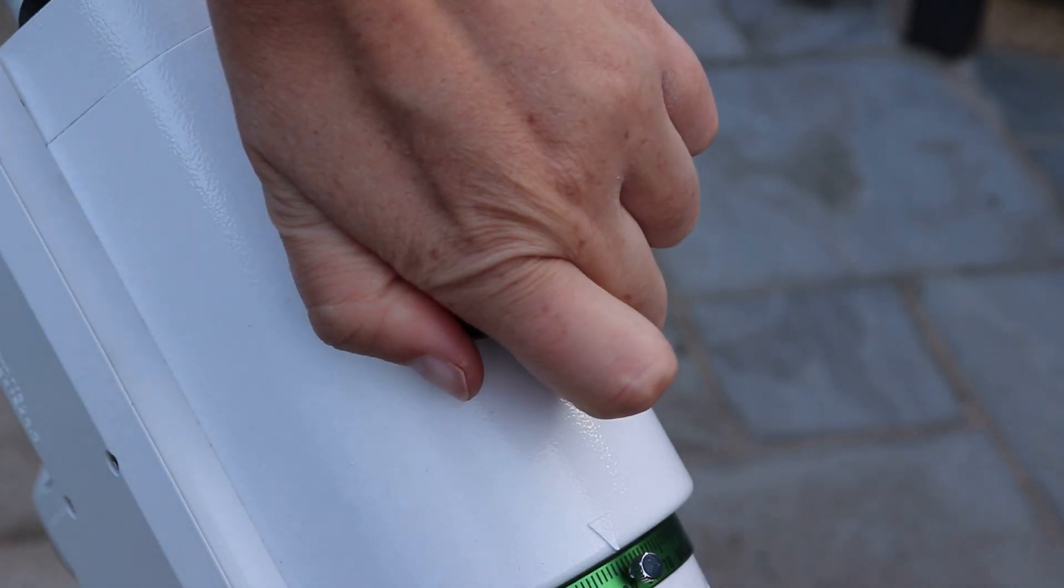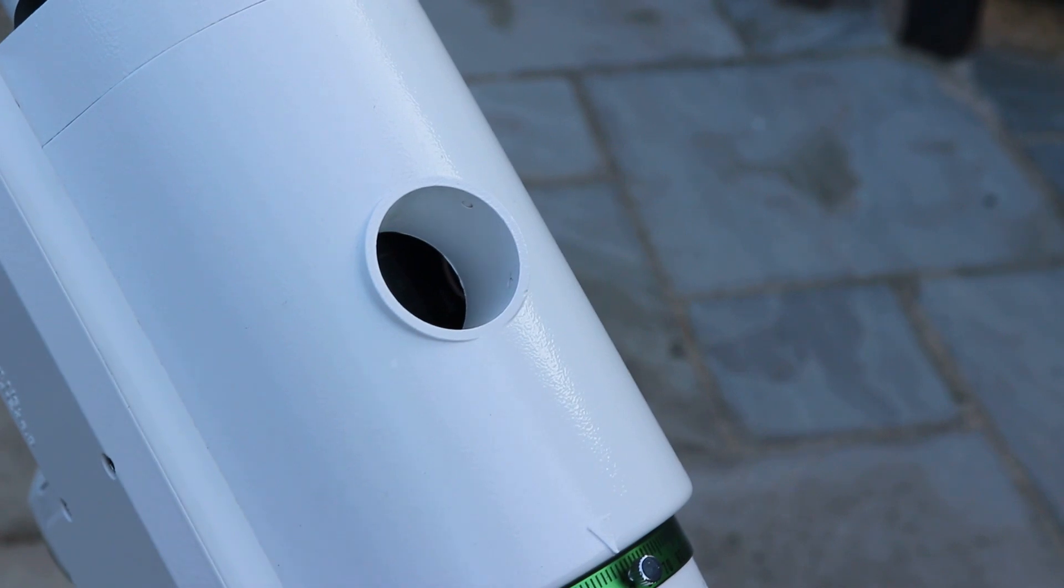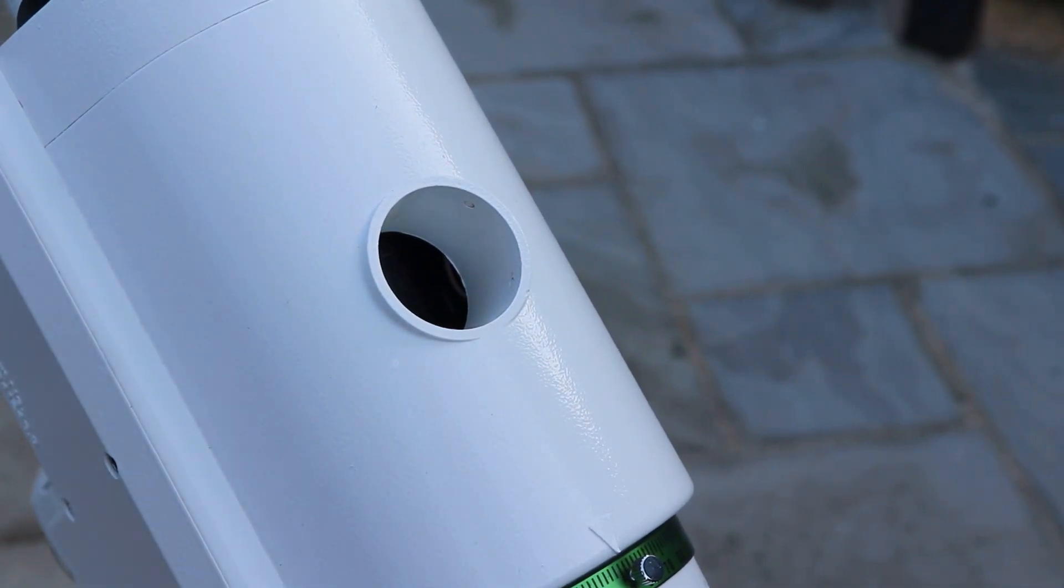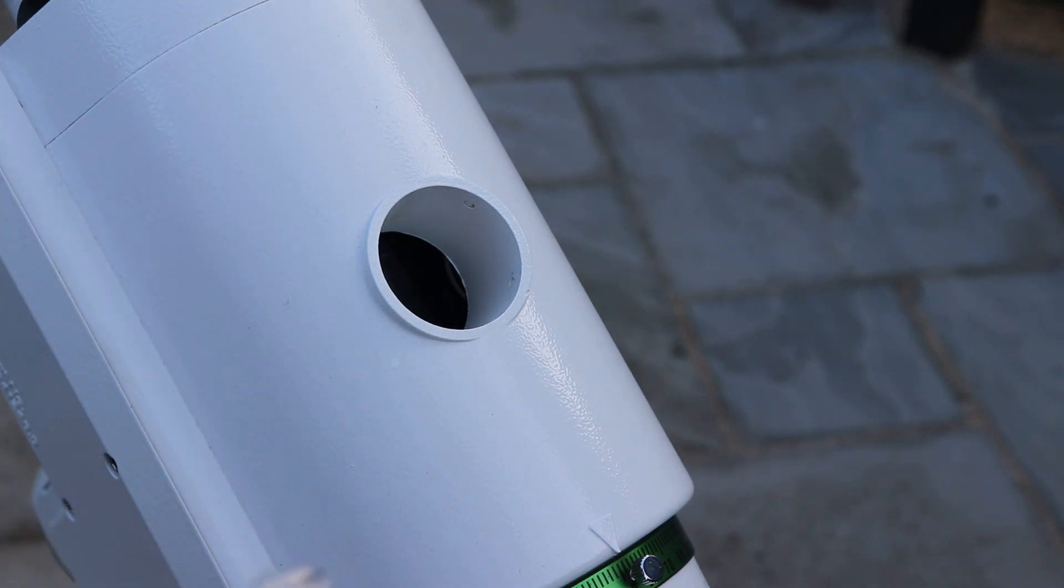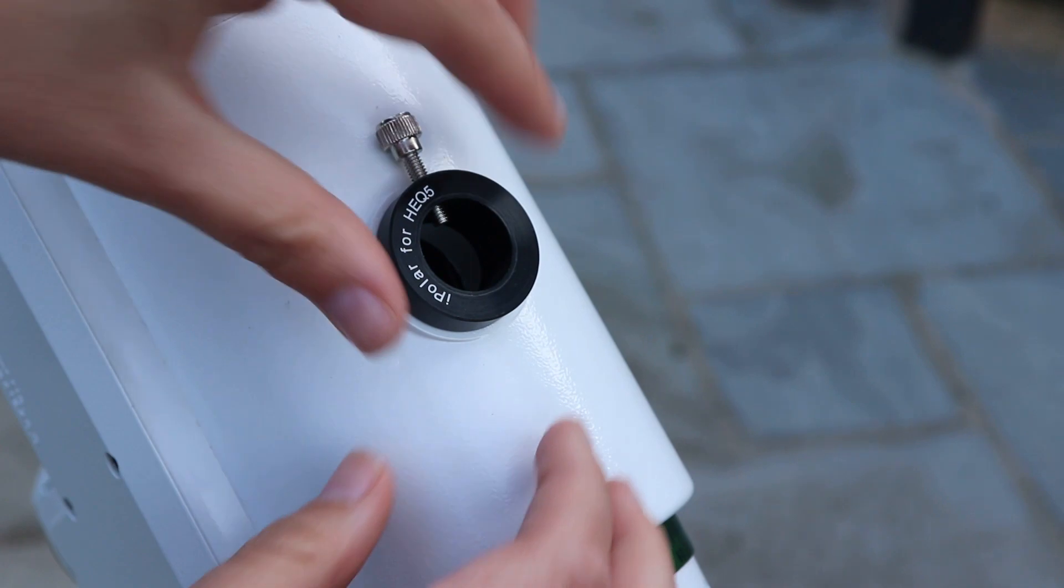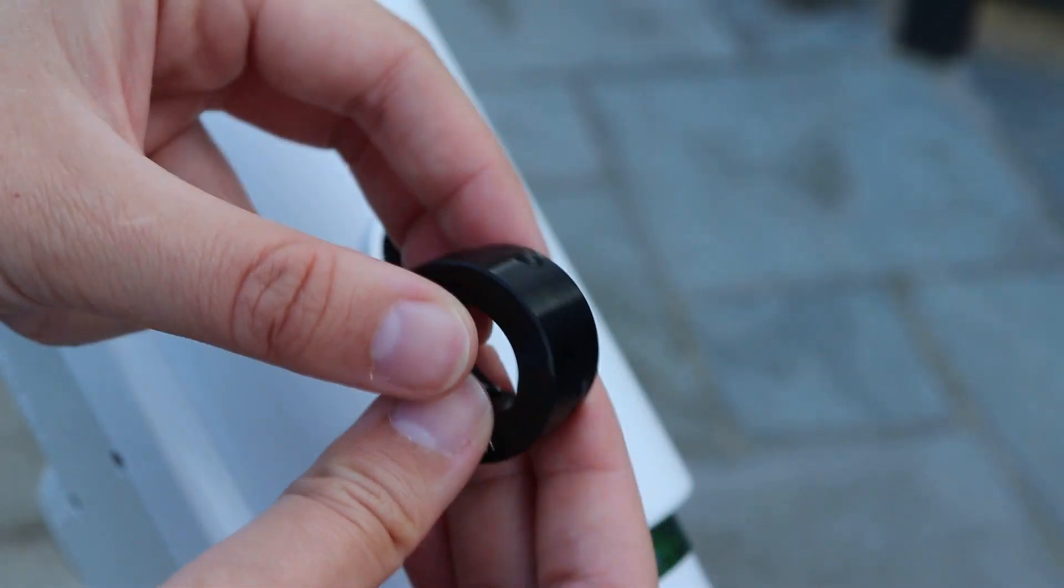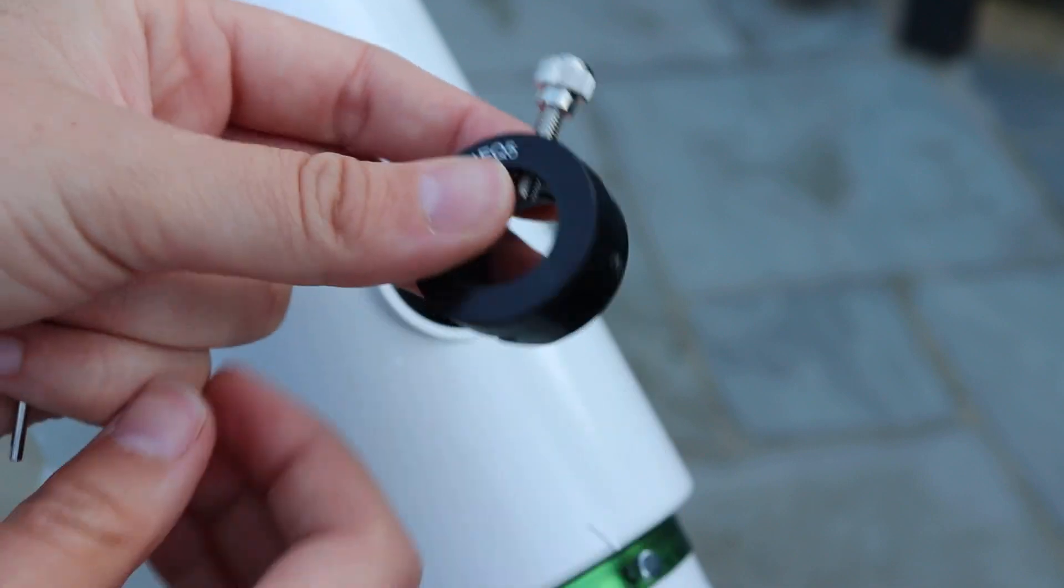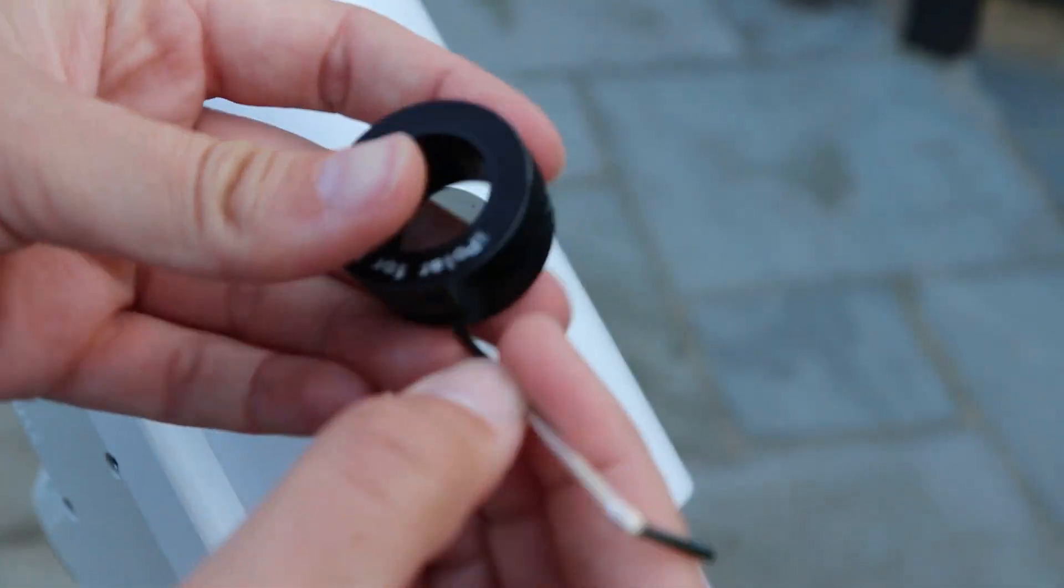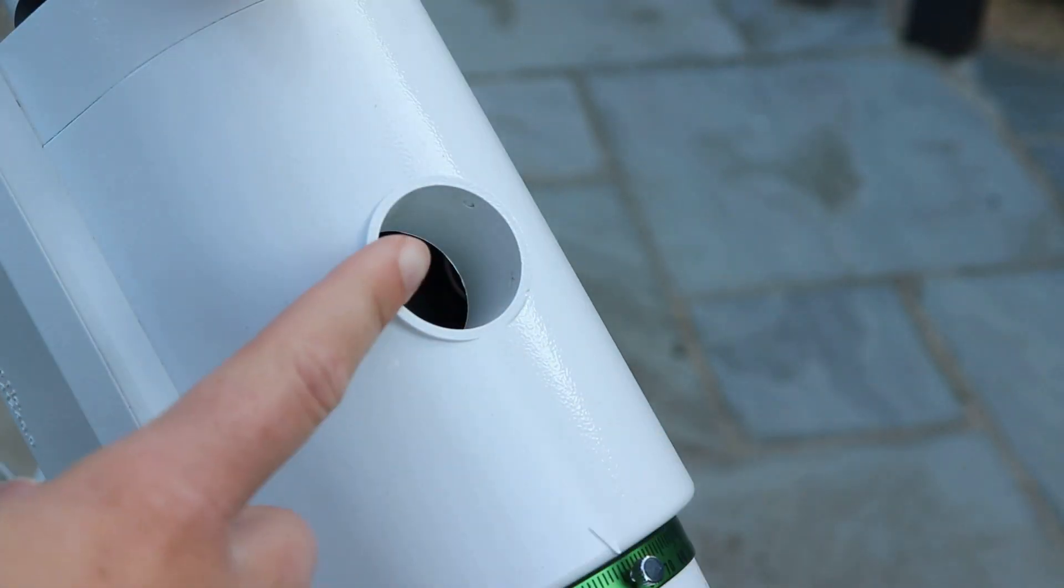So the first things we do to fit the iPolar to the HEQ5 is to take the cover off the polar scope. And then this adapter fits in here like so. So around the edge there's some grub screws to tighten it up. What I suggest you do first is to tighten them almost to the point where they're just sticking out, and that will make it easier to tighten when you have got it inside the polar scope hole.